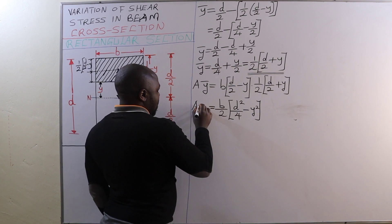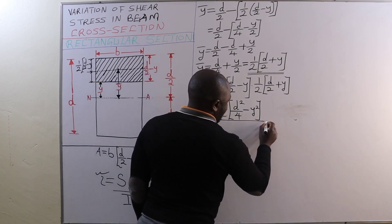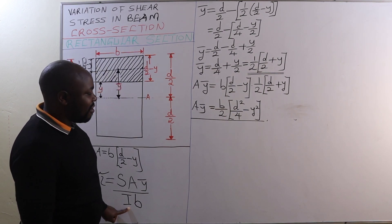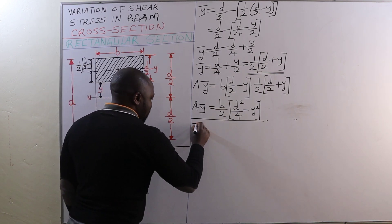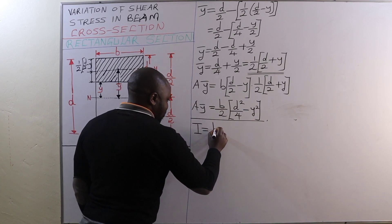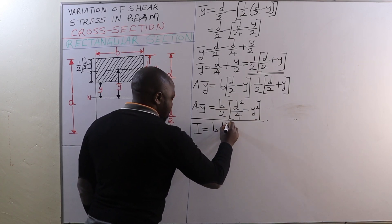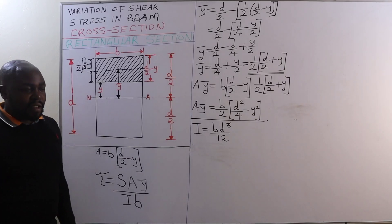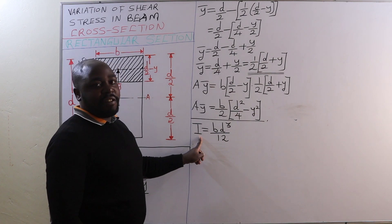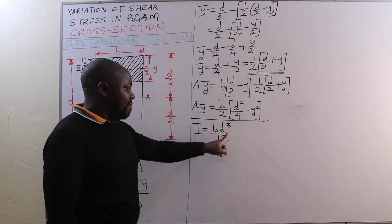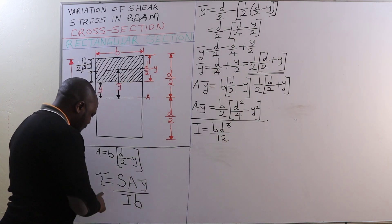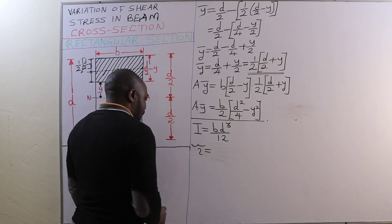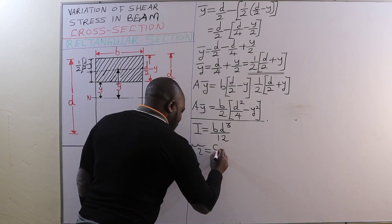The moment of inertia of a rectangular section is given by BD³ divided by 12. That is the moment of inertia of a rectangular beam section: I = BD³/12. Now the shear stress of our beam section can be written out.